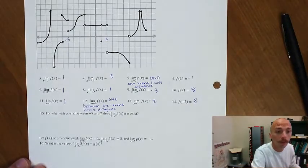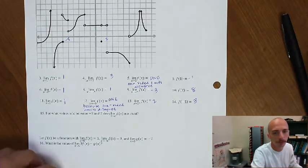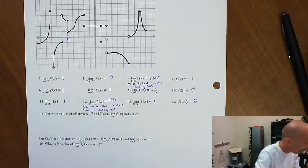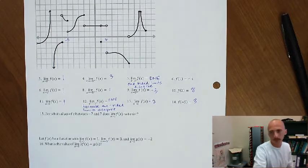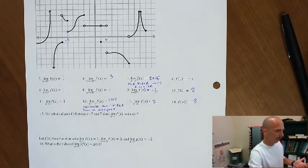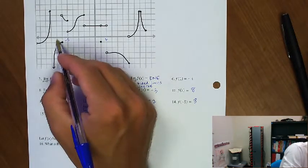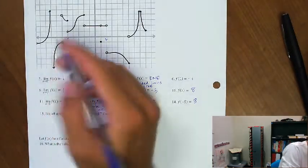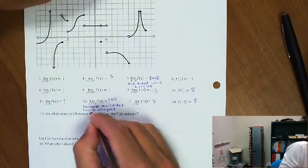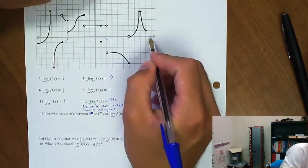For what values of c between negative 7 and 7 does the limit as x approaches c of f of x not exist? I'm not just going to restrict myself to that interval — I think I'm going to go all the way back and say from negative 10 to 10.